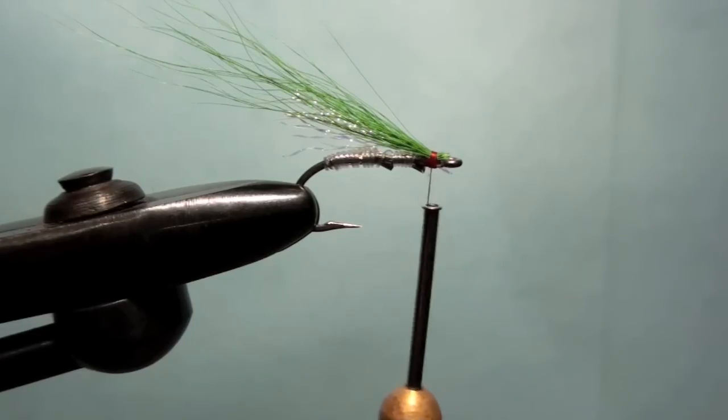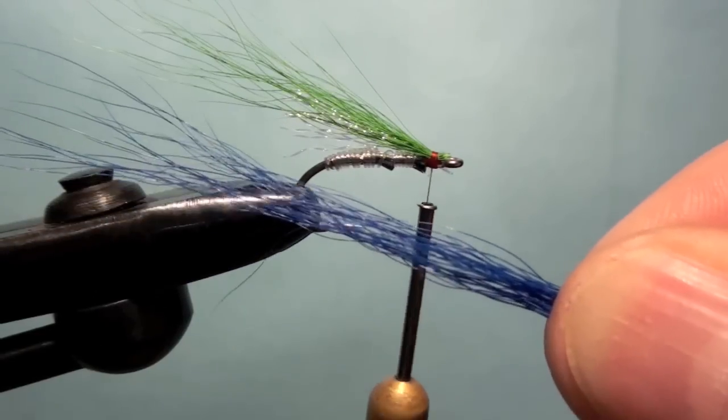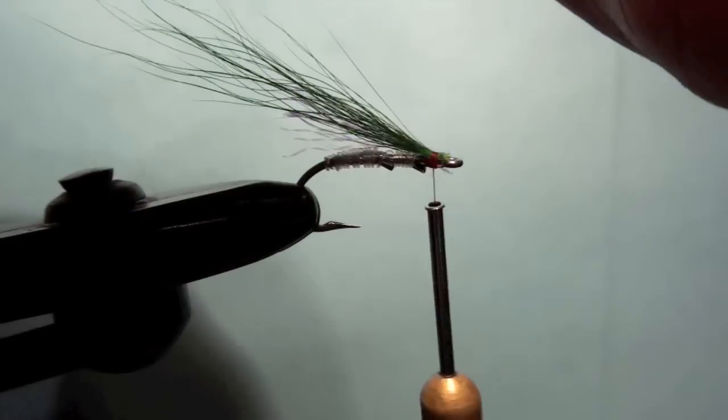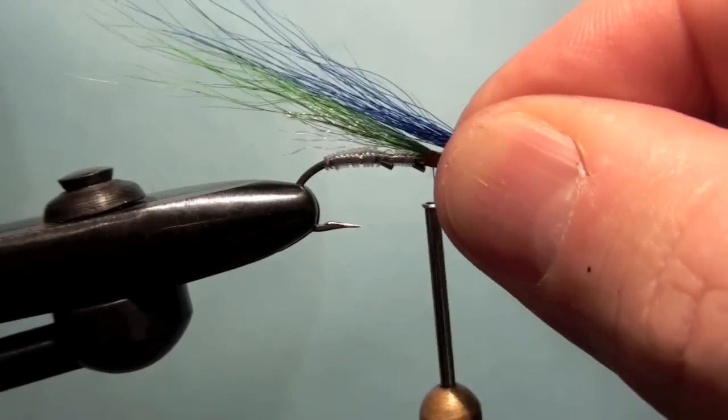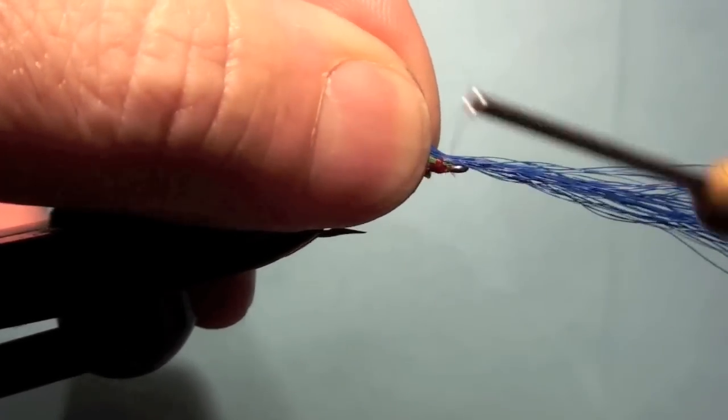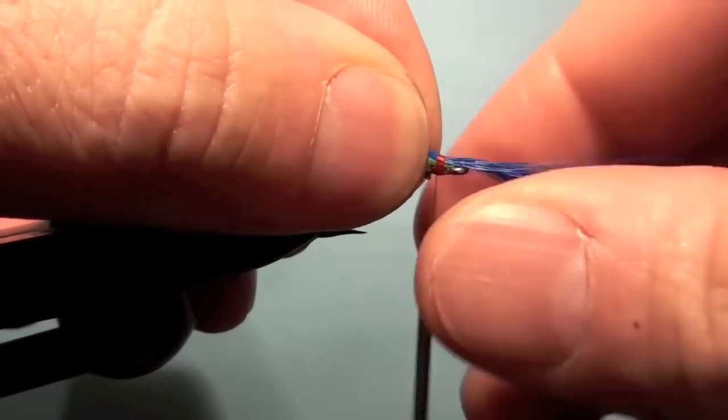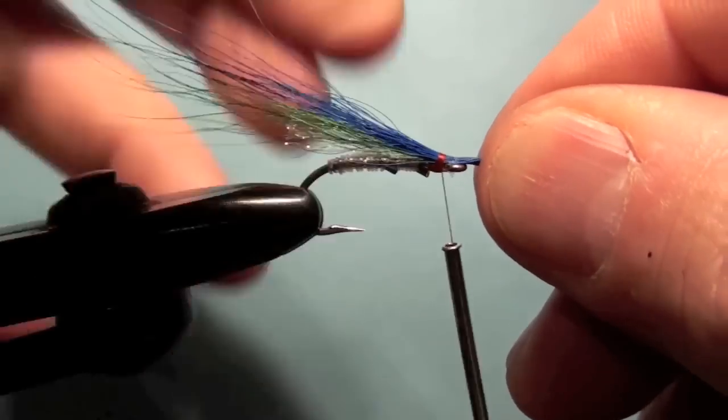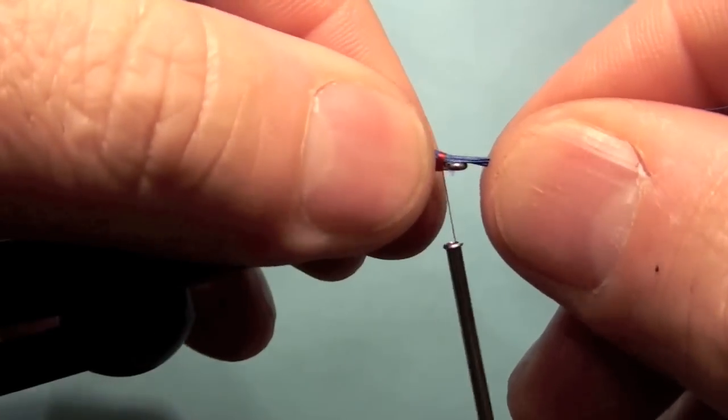And then the very top overwing is blue bucktail. And that's going to be a little longer yet, maybe just a tad longer than the green wing. And tie that in. Get that going on there. Get that on top so it looks good. You can also pull that forward if you feel it's too long. It's about right there.